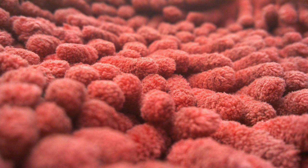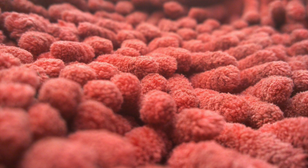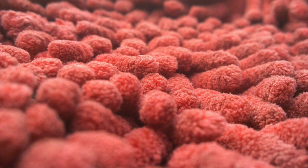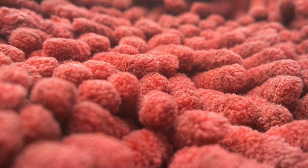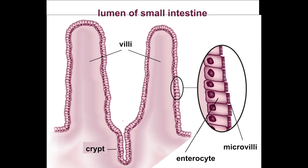The inside of the small intestine is covered by millions of villi, which greatly increase the uptake of digestive food from diffusion. They increase the surface area, which means that there is more room for diffusion to take place. Each individual villus is also covered by microvilli, which increases the surface area even more.